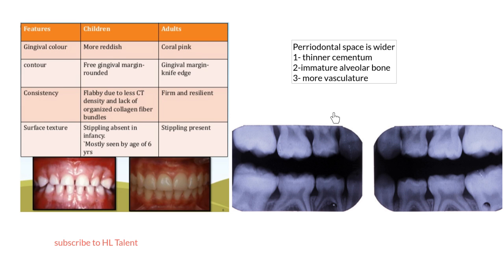There is another difference: the periodontal space in the child is wider in comparison to the adult. This is because there is thinner cementum and immature alveolar bone occupying the space, and there is a more vascularized periodontal ligament. Thank you for listening.